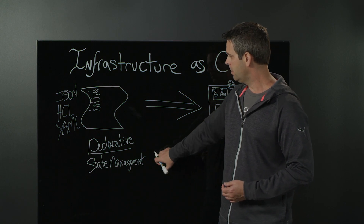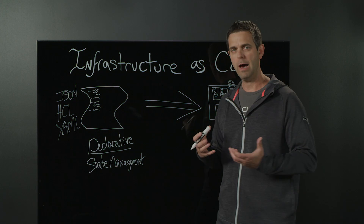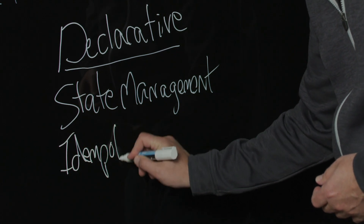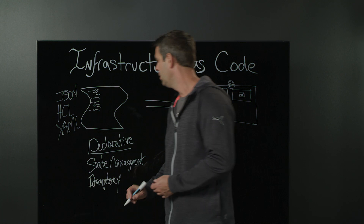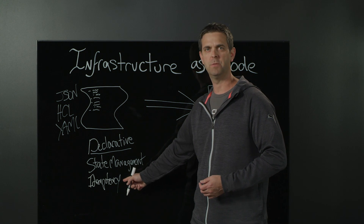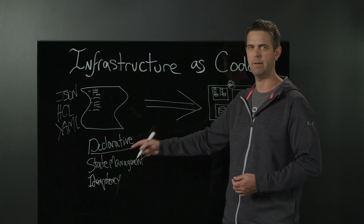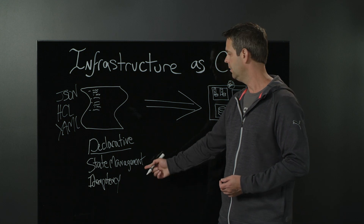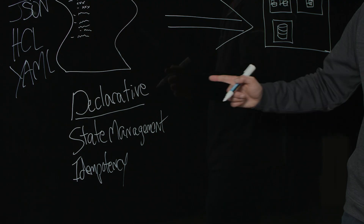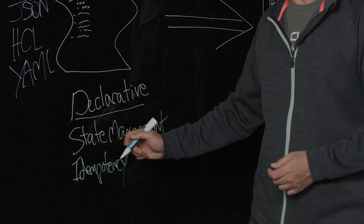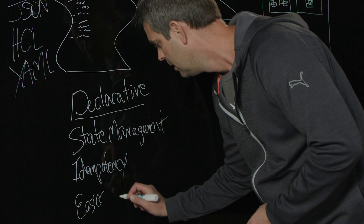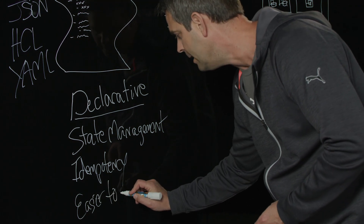Declarative is also going to help us handle the idempotency of the resources. If I've already defined and created a resource, we don't want to try to create it once more. We identify through the state that it already exists, the change has already been applied, so we simply move on to the next configuration item or change. Because of that state management, declarative infrastructure as code is generally easier to update or delete resources.